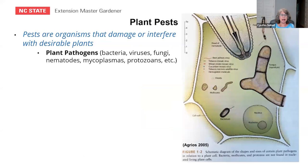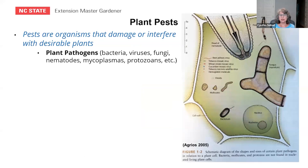A large category of pests is plant pathogens. Plant pathogens are organisms that include a number of different types: bacteria, viruses, fungi, nematodes, mycoplasms, and a bunch of other strange names for things they keep discovering.